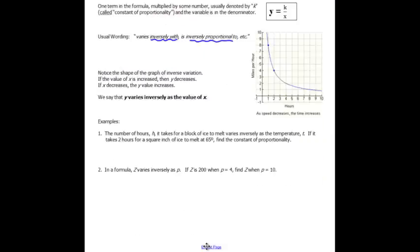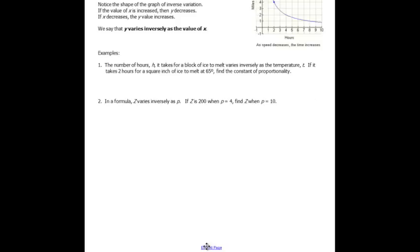Let's take a look at these two examples. The number of hours h it takes for a block of ice to melt varies inversely with the temperature. If it takes two hours for a square inch of ice to melt at 65, find the constant of proportionality. So it's telling me that h varies inversely as time. Basically, that's the way you set up the formula. So for two hours at 65 degrees, I'm going to take that constant of proportionality and it's going to be 130.